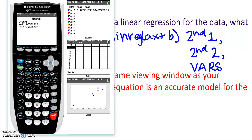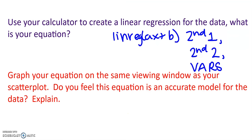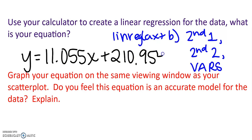Then I'm going to go down here to calculate. And this tells me that my a or my slope is 11.055 and my intercept, or my b, is 210.954. We'll round two. So my equation, y equals 11.055x plus 210.954